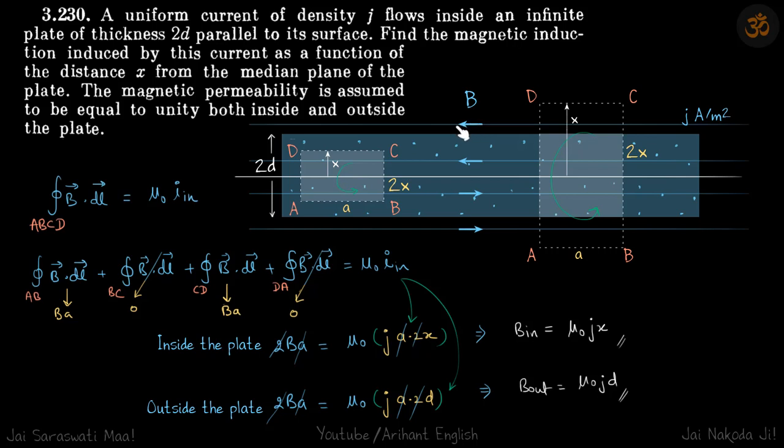One more thing is by symmetry you can see that the field here on the top of this median line will be towards left and it will be uniform. Because this plate is extending both sides up to infinity. So field has to be uniform. And below this median line field will be in the other direction. But again it is uniform.